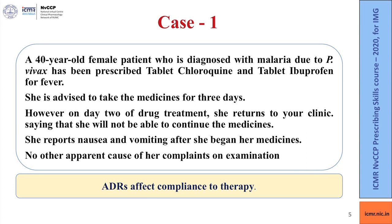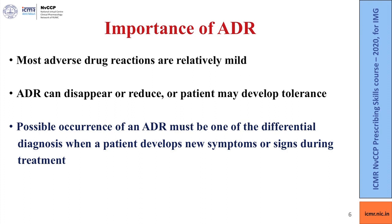Now let us try to understand adverse reactions and their impact on therapy through a few case studies. This is a case of a 40-year-old female patient diagnosed with malaria due to P. falciparum. She was prescribed tablet fluoroquine and tablet ibuprofen 400 milligrams for fever, and was advised to take the medicines for 3 days. However, on day 2 of drug treatment, she returned to the clinic saying she could not continue the medicines, reporting nausea and vomiting after beginning her medicines. There was no other apparent cause of her complaints on examination. This case illustrates the fact that an adverse drug reaction can affect compliance to therapy.